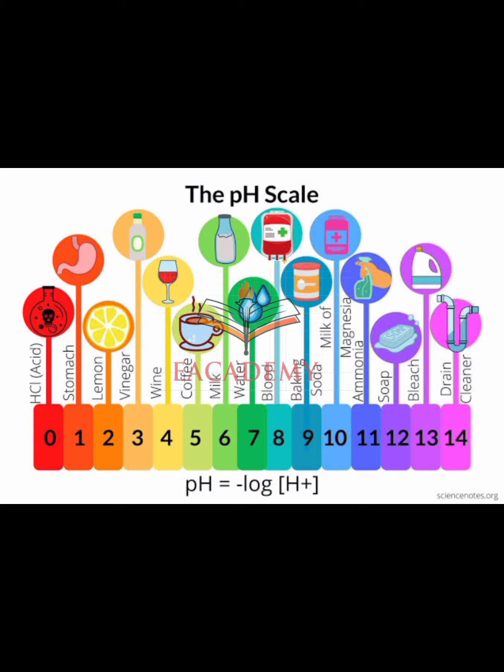Tomatoes 4.5 to 5.2, bananas around 5.0, acid rain 5.0, black coffee 5.3 to 5.8, bread 5.4 to 6.2, red meat 5.9, cheddar.